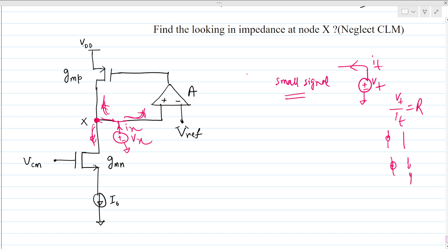If we apply the test voltage Vx and look downward, that impedance is infinite — the current source will be open-circuited, and since channel length modulation is neglected, the rds of the MOSFET is also infinite, so no current flows through this branch. Similarly, no current can go through the op-amp input terminal, so the impedance looking into the op-amp input is also infinite.